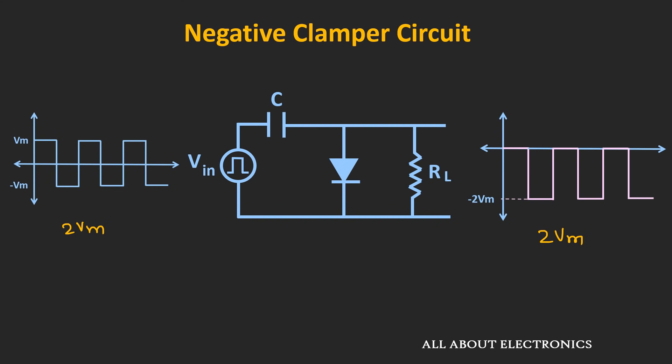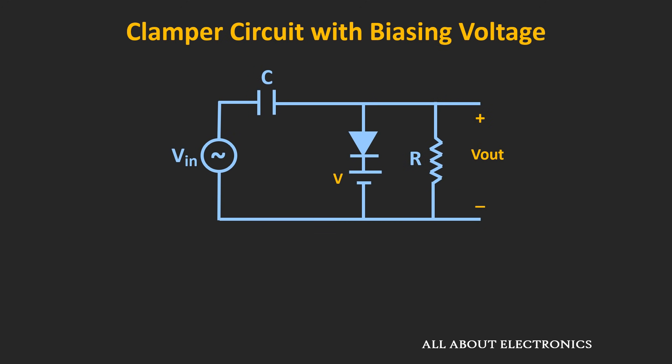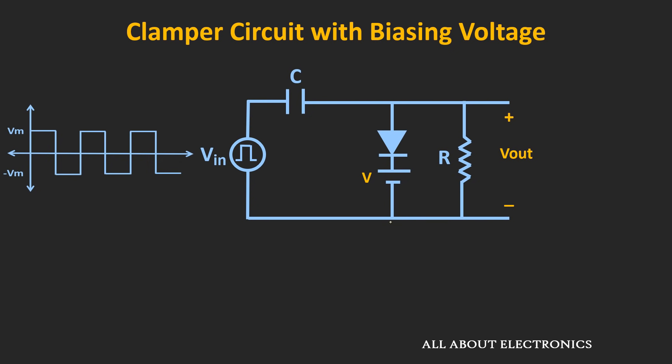As I said earlier, to shift the reference level or the DC level of the waveform, sometimes the biasing voltage is also used with this clamper circuit. Now let us see the clamper circuit with the biasing voltages. This circuit shown here is the negative clamper circuit with the biasing voltage. Let us analyze this circuit by applying a square wave as an input. Here, V volts is the applied biasing voltage, and we are assuming that this voltage Vm is greater than V volts.